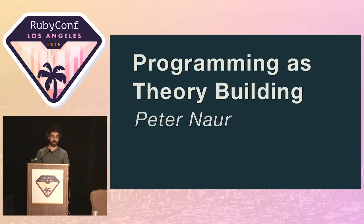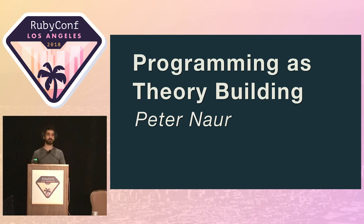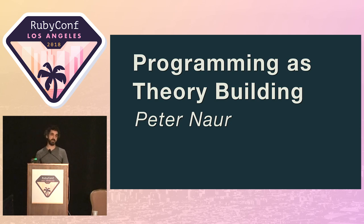Peter Naur spoke to this in a paper he wrote in 1985 called 'Programming is Theory Building.' In it, he proposes that programming isn't actually about the production of executable code, but is actually the process by which programmers build up their mental model — their theory of how the software needs to work. To Peter, the code itself was merely a secondary artifact. He goes even further and states that for the software to remain viable and maintainable, the programmers that hold the knowledge in their heads need to be around. The program effectively dies when the team is disbanded.